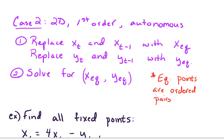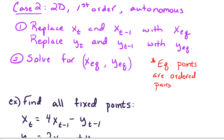Case 2 involves a 2D system — we have two different variables, x and y. We're still working with a first-order system and it is still autonomous. The steps for finding the fixed points: we will replace x_t and x_{t-1} with x_eq, similarly we'll do the same for our y variables, and then solve for the ordered pairs (x_eq, y_eq). Let's do an example.